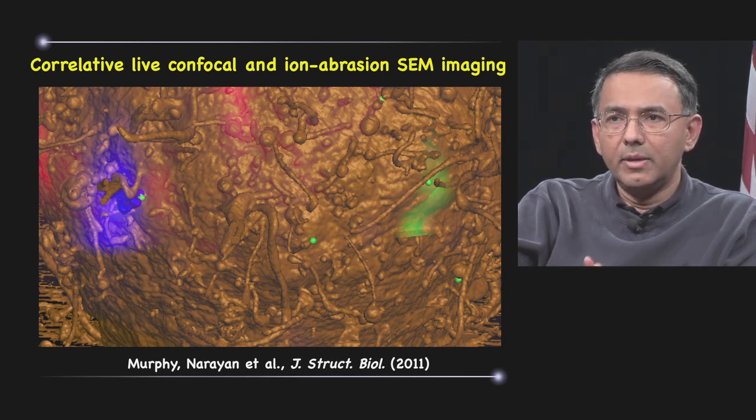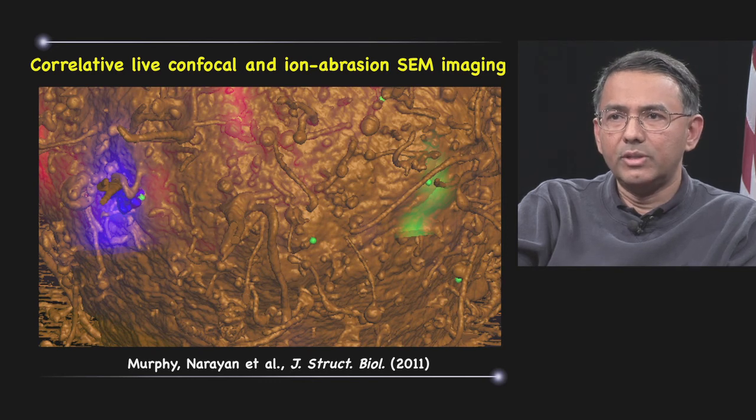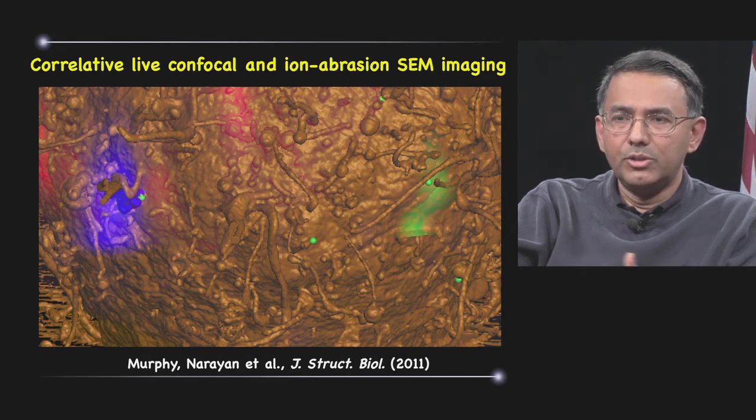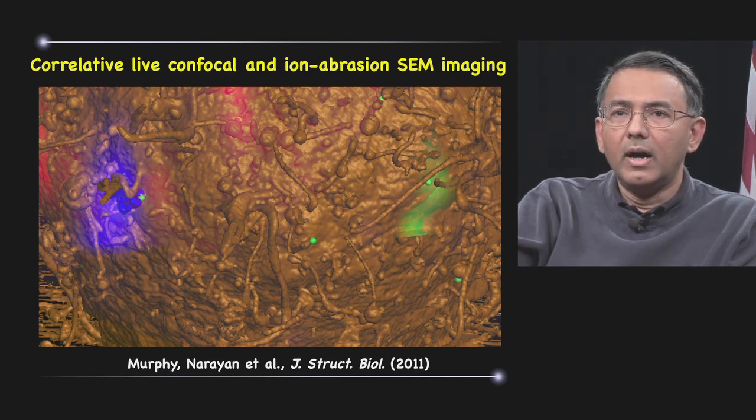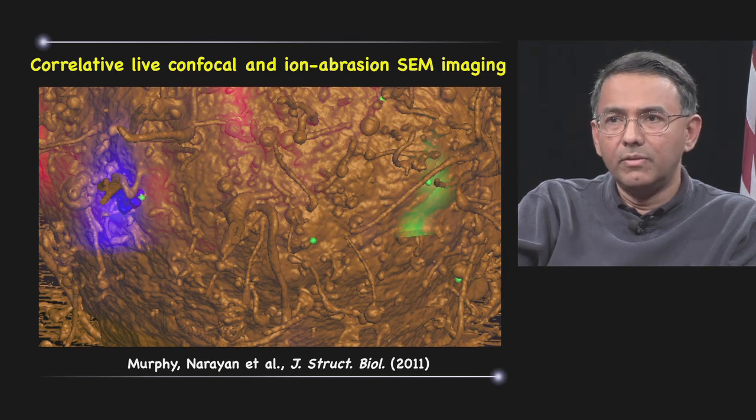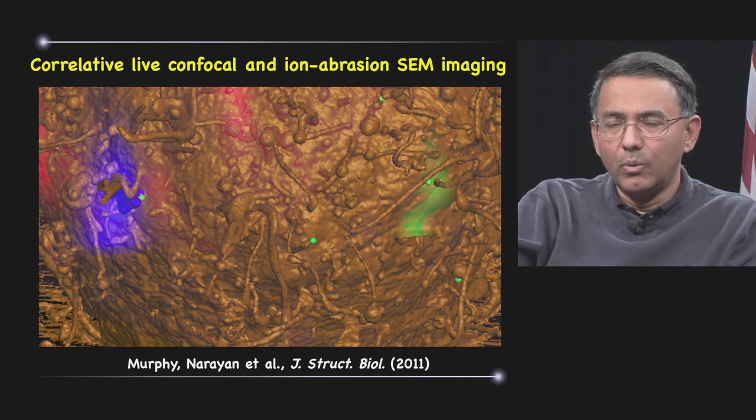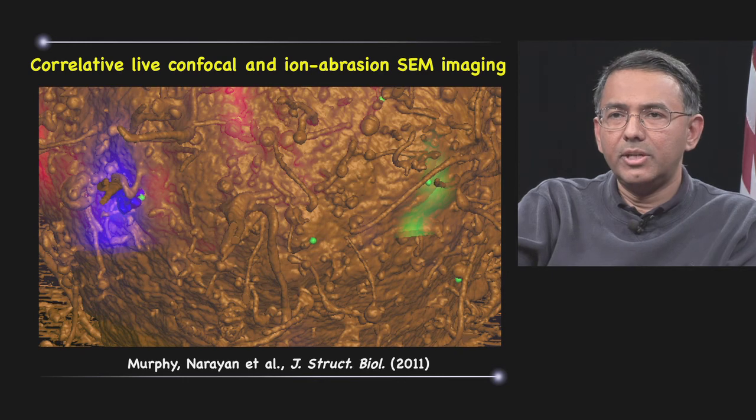in contact with a T cell, whose outline you can see in red. And if you look at the image of the same cell, which we've now done using ion abrasion scanning EM, which now captures not just the fluorescent entities, but the entire ultra structure of the cell, we can now combine these two and essentially match up the location of the virus with the ion abrasion SEM image.